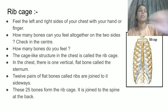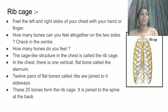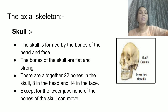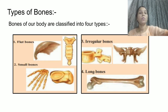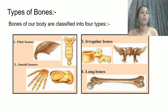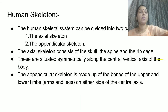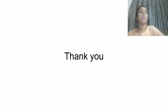That's it for today's class. Your homework is to read the chapter and write the four types of bones which are there in the body — flat bones, small bones, irregular bones, and long bones. You don't have to draw any diagram right now; I will tell you which diagrams to draw later. We will meet in our next class. Have a nice day!